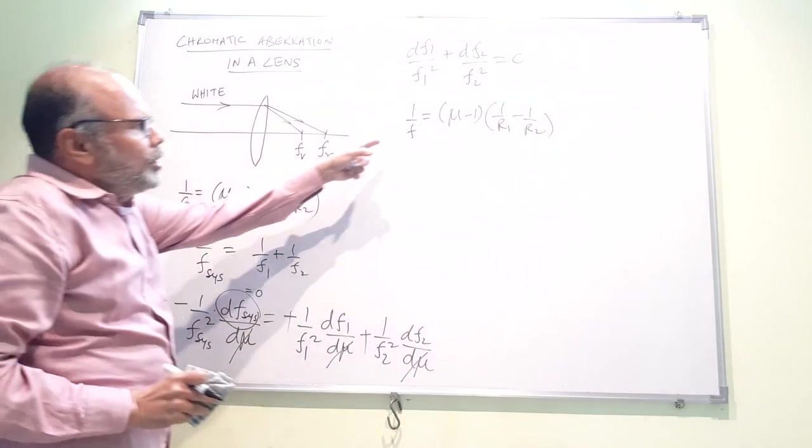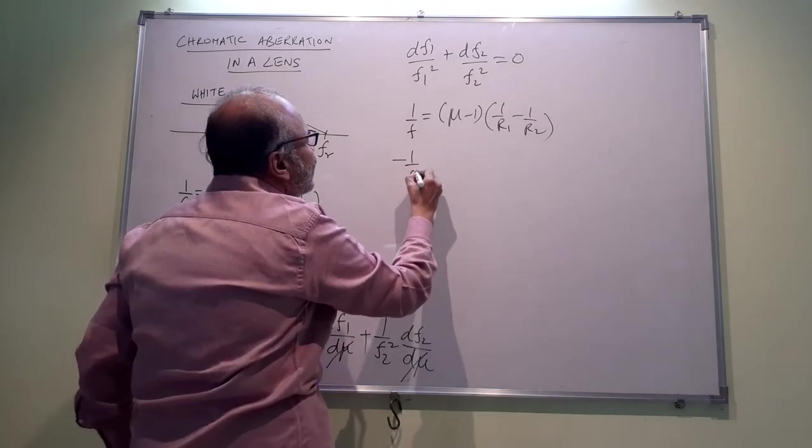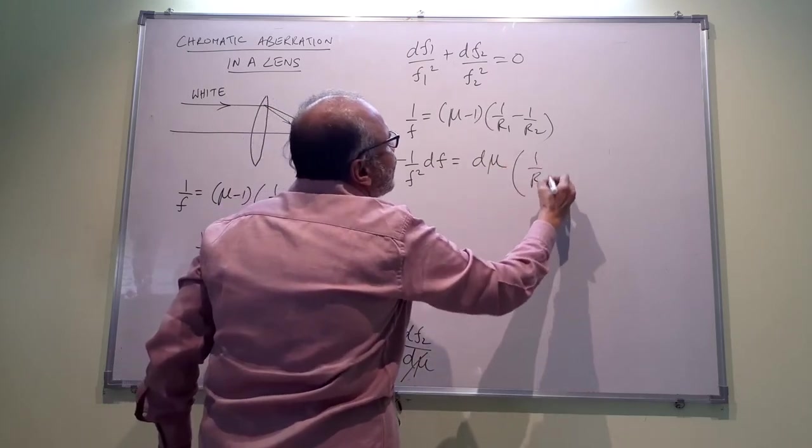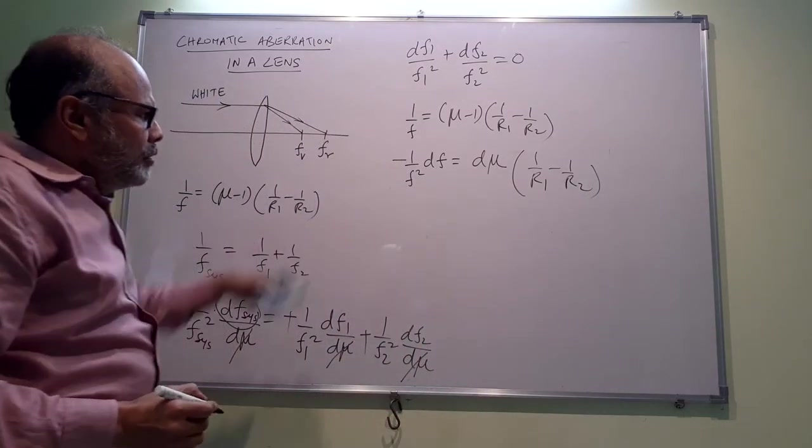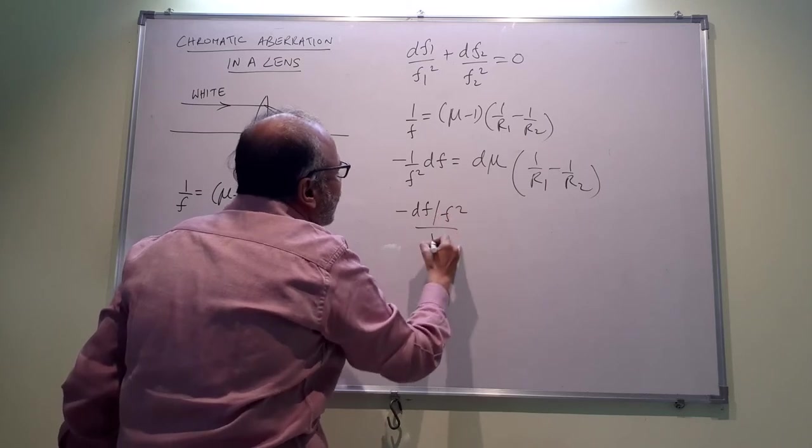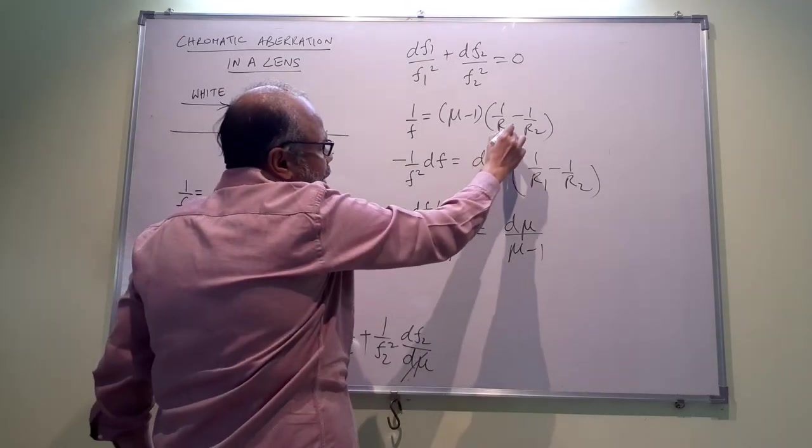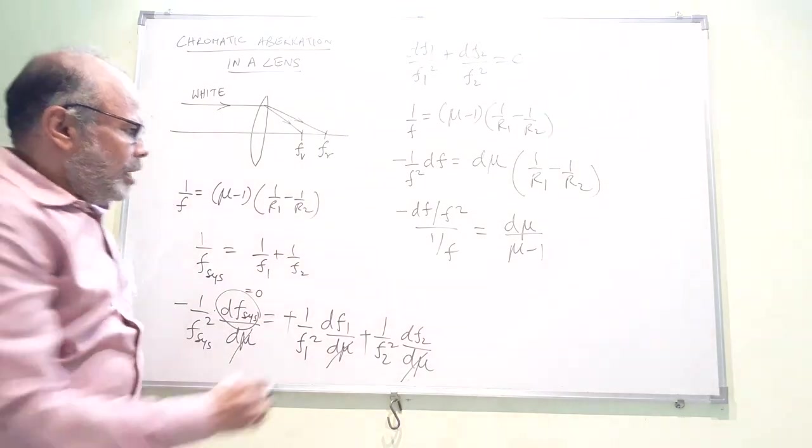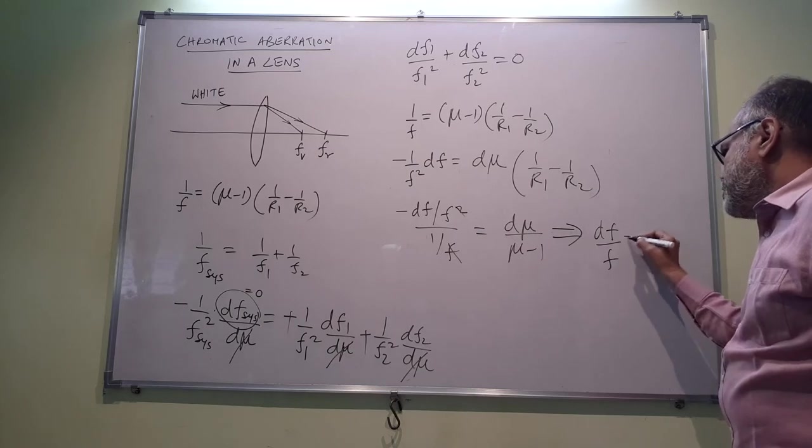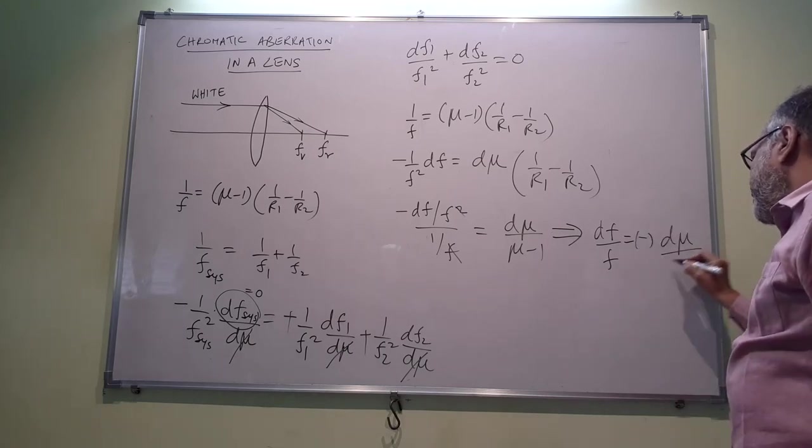If you differentiate this, let us take the differentials. If you took the differentials, you will get -1/f² df = dμ(1/r₁ - 1/r₂). Now let us divide the two, the second by the first. So we will have -df/f² divided by 1/f = dμ/(μ-1) times (1/r₁ - 1/r₂). The (1/r₁ - 1/r₂) will cancel, 1/f also cancels, and you have basically df/f = -dμ/(μ-1).